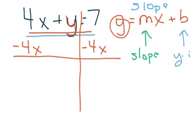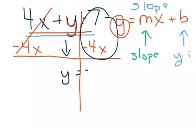When we do that, 4X minus 4X cancels out, and we bring down our Y, and we rewrite what's left over, minus 4X plus 7.